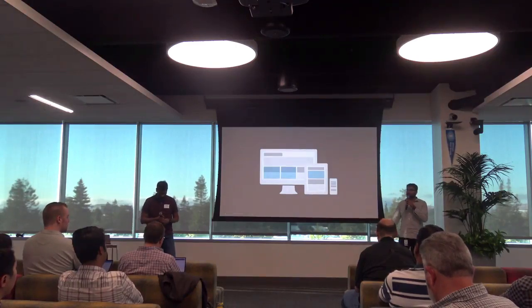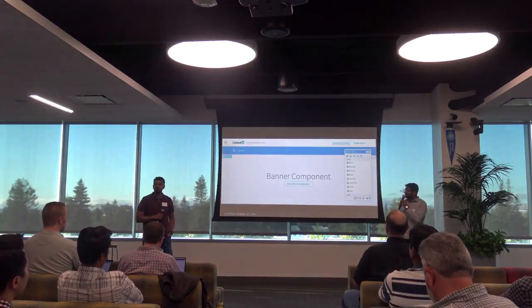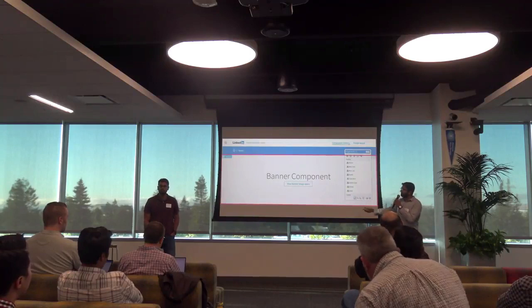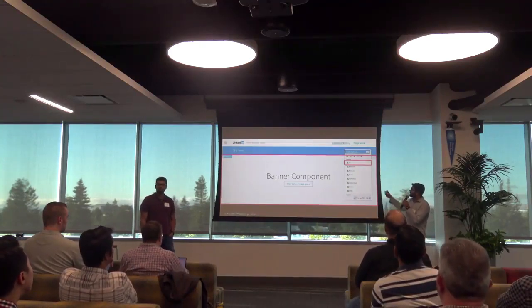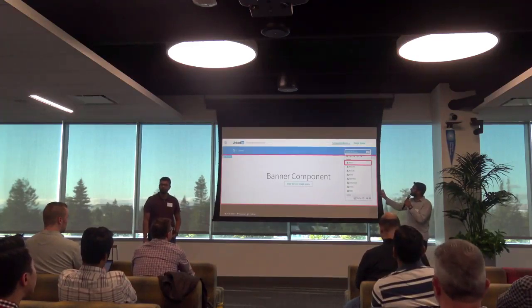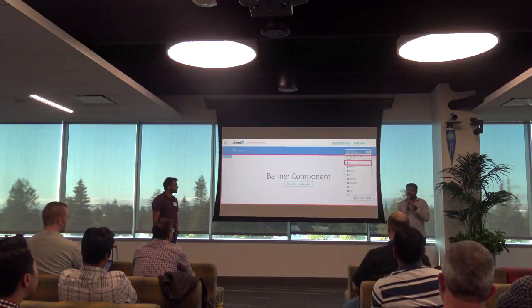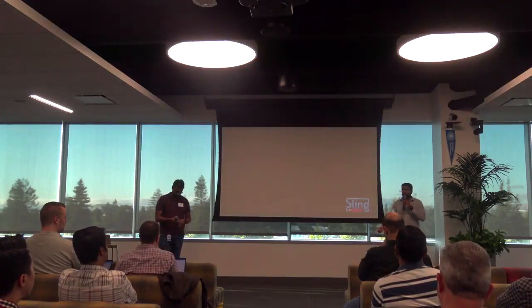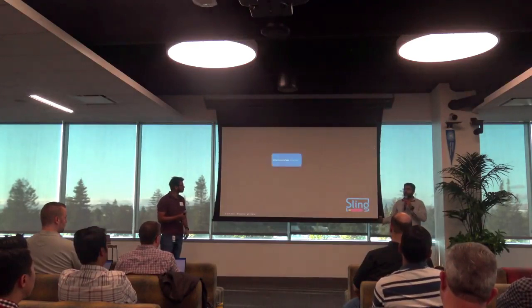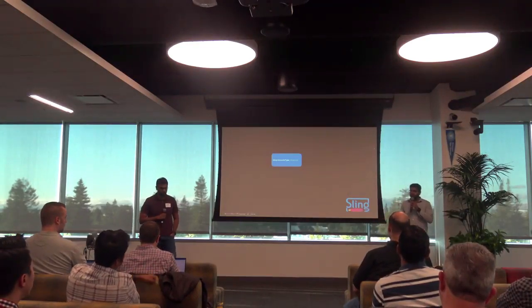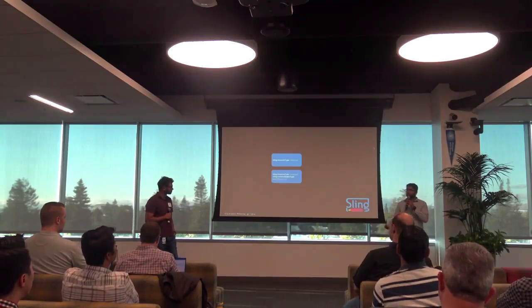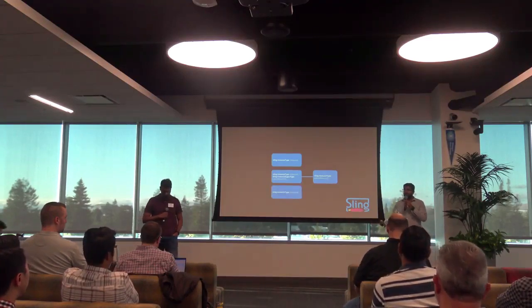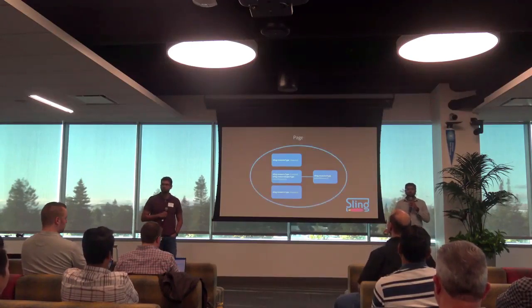Looking at a sample page in AEM, there's a clear sense of components — for example a banner component — and the sidekick lists all components you can drag and drop onto a page. On the backend, Sling provides the same sense via resource types: component one with a parent resource type, component two, component three — all strung together to generate one page. But what about JavaScript? AEM doesn't really provide a strong sense of components for the front end.